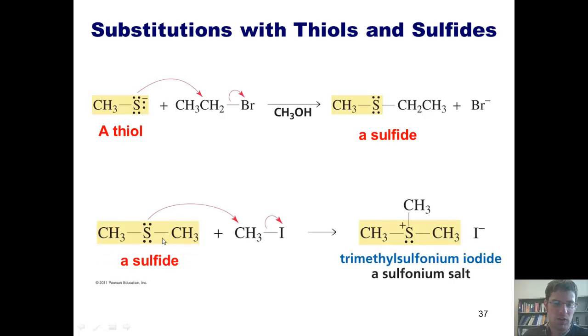Similarly, you can take a sulfide and treat it with an additional alkyl halide to form this type of product called a trimethylsulfonium iodide. As with our quaternary ammonium salts, sulfur can handle a positive charge, not because it lacks a full octet, but because it's forming more bonds than it likes to in a neutral state. So these are substitution reactions with thiols and sulfides.